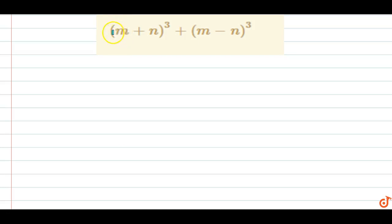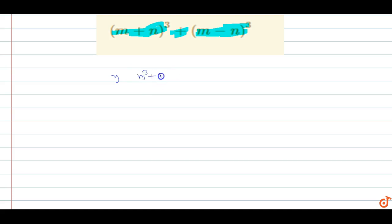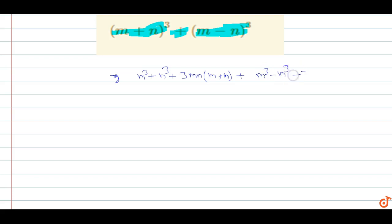The question is (m+n)³ + (m-n)³. We expand: (m+n)³ equals m³ + n³ + 3mn(m+n), and (m-n)³ equals m³ - n³ - 3mn(m-n).